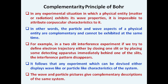For example, in the double-slit experiment, if you try to define the electron trajectory either by closing one slit or by placing a detecting apparatus, it is observed that the interference pattern disappears. This simple experiment proves both the particle and wave nature of photons. The wave and particle pictures give complementary descriptions of the same system, and this is how Bohr uses complementarity to explain quantum mechanics and the uncertainty in measuring physical entities.